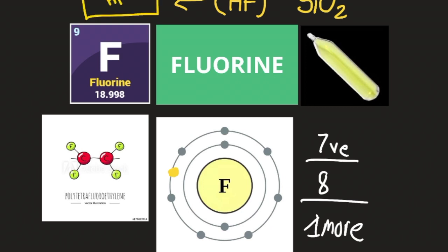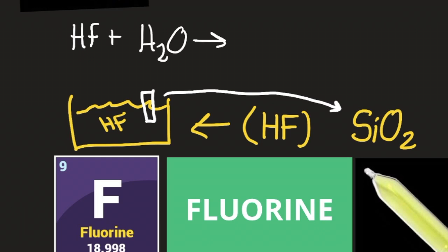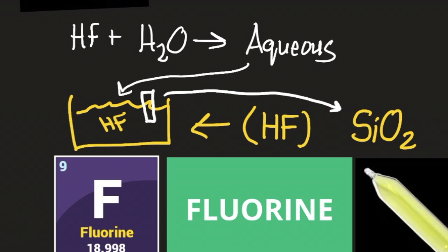Once the fluorine dissipates and separates from the hydrogen, it's able to express its desire for that one lone valence electron and looks for it in its environment. When interacting with silicon dioxide, it sees that the oxygen and silicon have electrons available to donate. That's exactly what hydrofluoric acid does. We're not going to go into the detailed formulas — this is just a general representation of what fluorine does and what it's used for in everyday life.